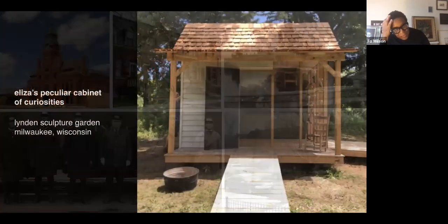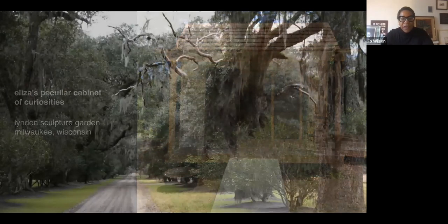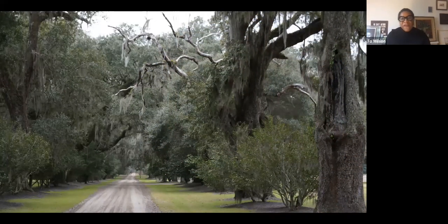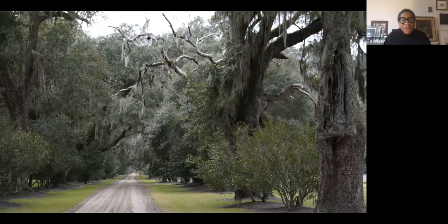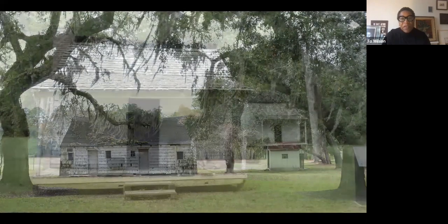To continue with ideas of history, I'm going to talk about three projects. The first project is called Eliza's Peculiar Cabinet of Curiosities. It is in the Linden Sculpture Garden in Milwaukee, Wisconsin. The installation opened in 2016 and is still there — a semi-permanent installation open seasonally from April through about November every year. It started with quite a bit of research. The Chipstone Foundation, one of my benefactors with a large decorative arts collection, was a major funder and supported my research and production. You're looking at Charleston, where I went to do research on slave cabins — some of these pictures I took still exist in the country.